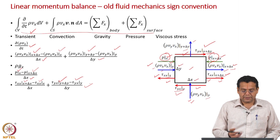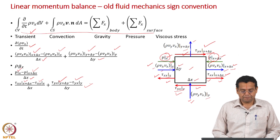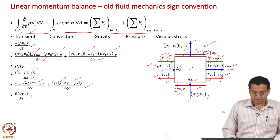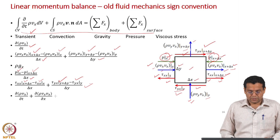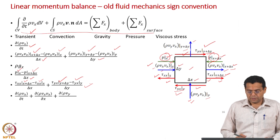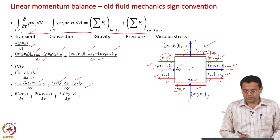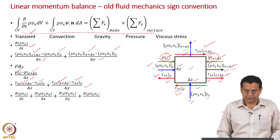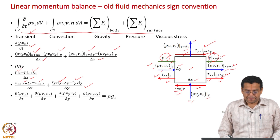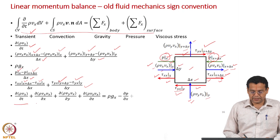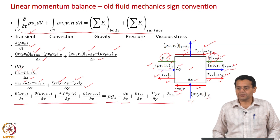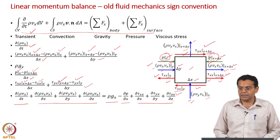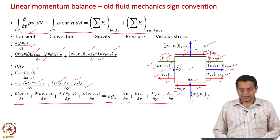Taking the limit as delta x, delta y, delta z tend to zero gives the full momentum equation written here for 3D, which we have already discussed for 2D. This includes the transient term, the convection term, the gravity term, the pressure term, and the viscous stress term. This is a recall — we have already discussed this for three dimensions.